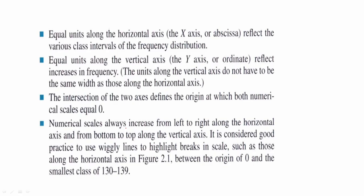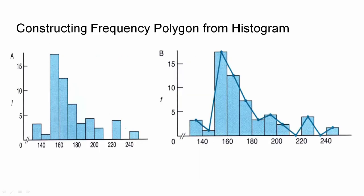That's how you read the points. Next, second: frequency polygon. So frequency polygon is like this. There are two different ways. One is direct — here is a histogram. So there is a histogram. Start the diagram. We can read the right term. If you don't have a histogram, you will find it in the book.